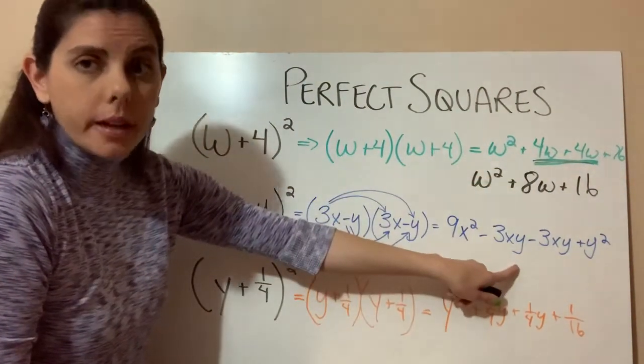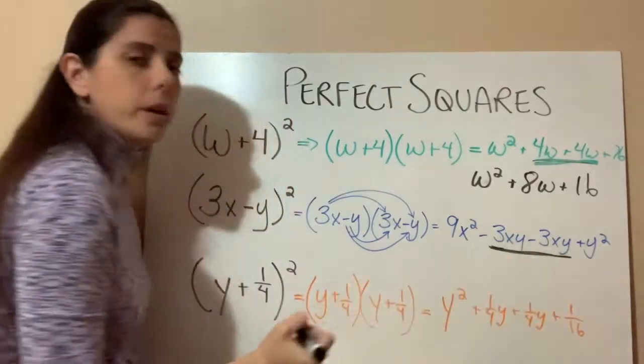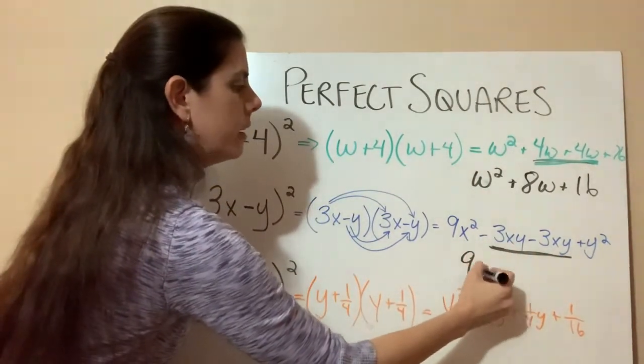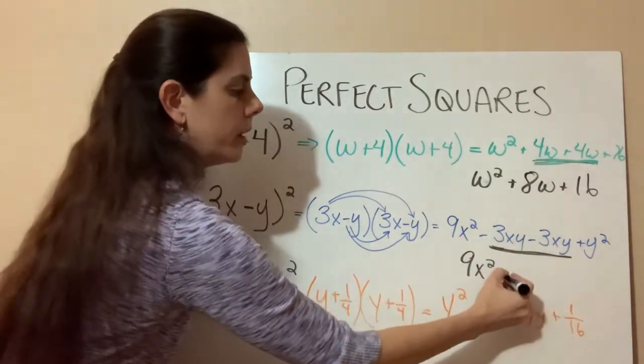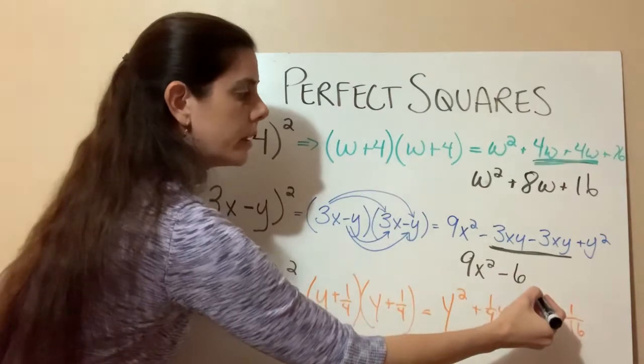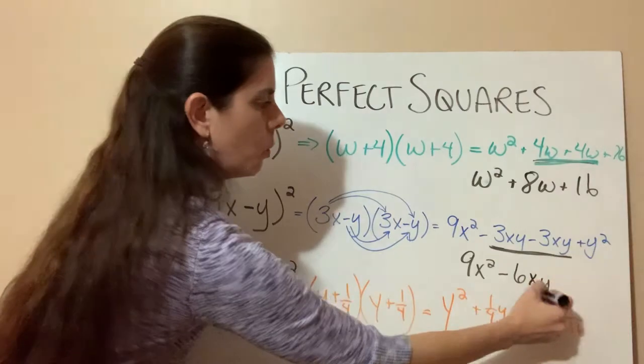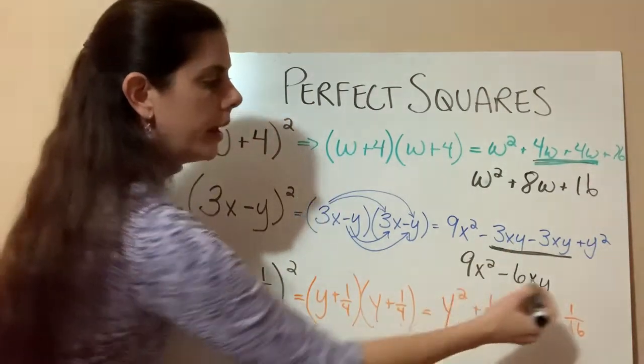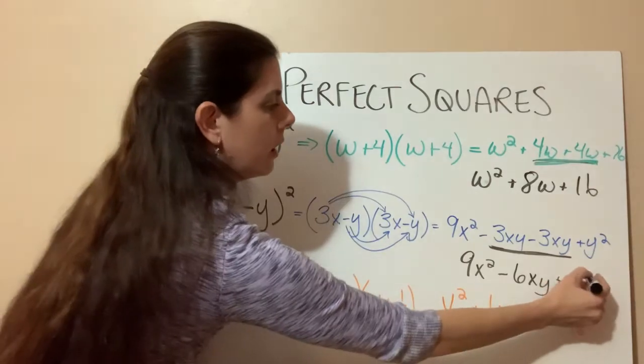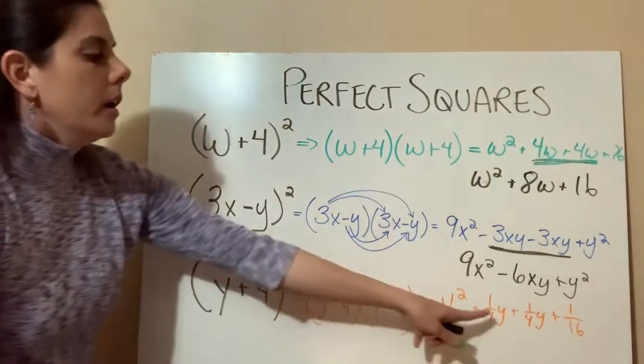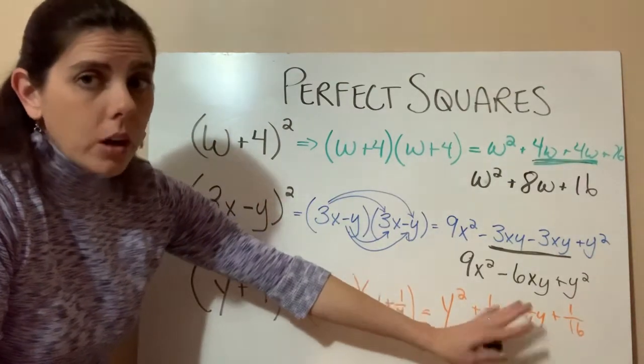And what's going to happen on the second one is the same thing. We're going to look and see that these middle two terms will combine. So we're going to have 9x squared, and then a negative three and a negative three is a negative six. And then we're going to have xy. So we bring those along. And then our last one is a positive y squared.